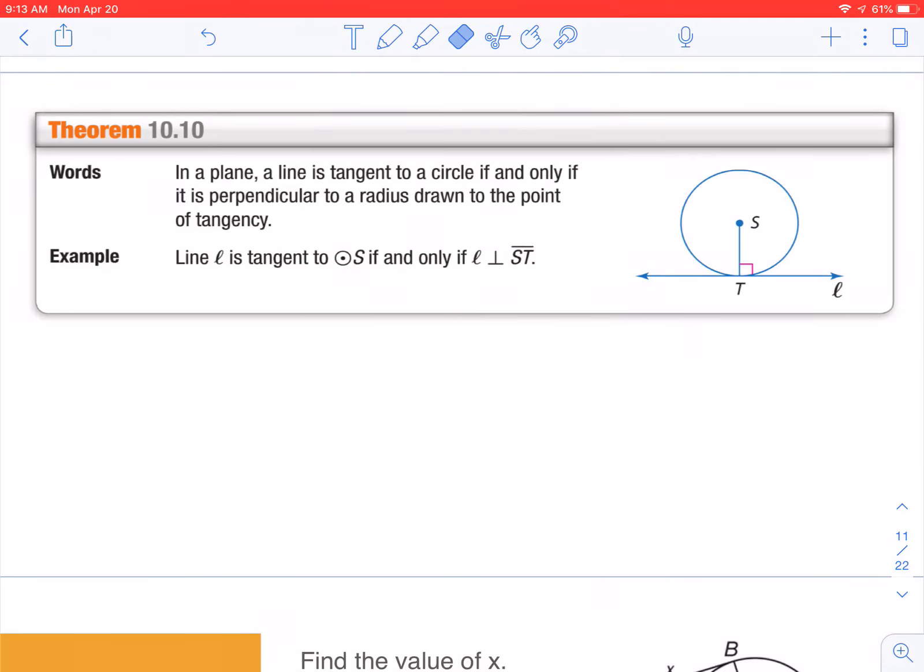Here we are, 10-5 part 2. We're going to be talking about lines that are tangent to the circle, and it's only going to be tangent if it's also perpendicular to the radius. So we're going to be using perpendicular tangents to a circle to solve problems.